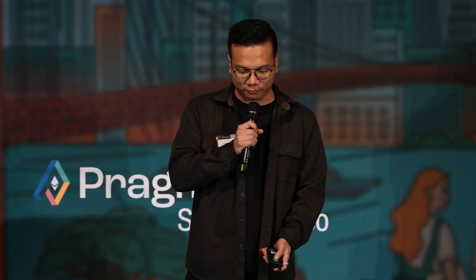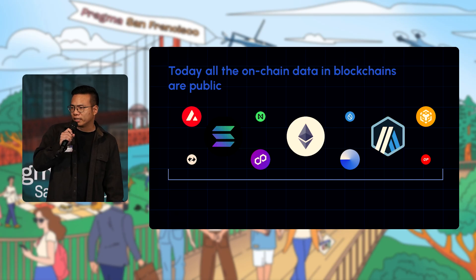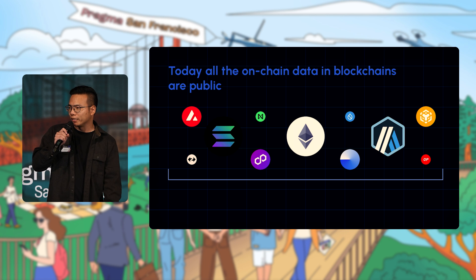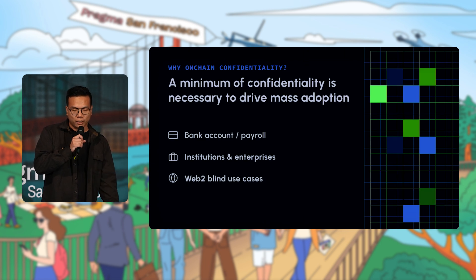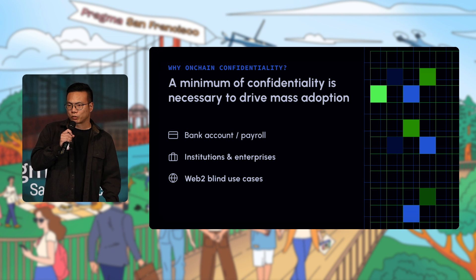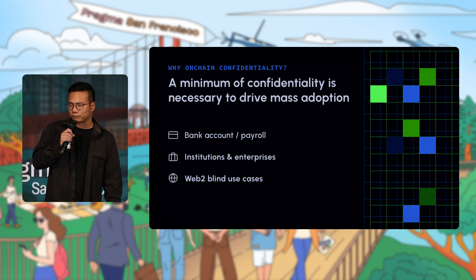Hi everyone. I'm Remy, the founder of Inco. What we're building is what we call the universal confidential computing network. Today, all L1s and L2s have one thing in common: they are transparent databases. We actually believe that there needs to be a minimum level of confidentiality necessary for mass adoption.